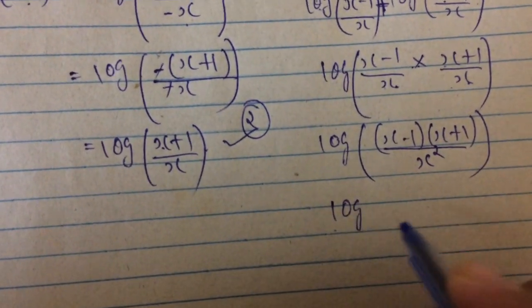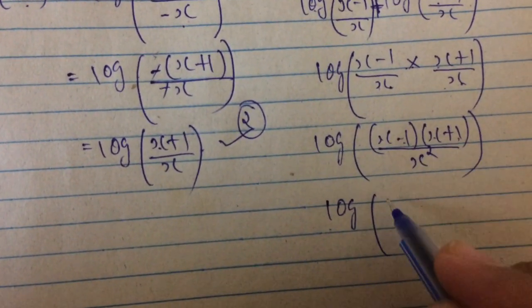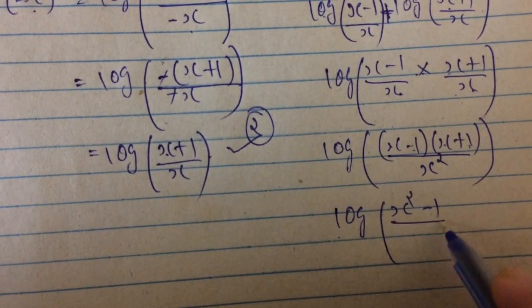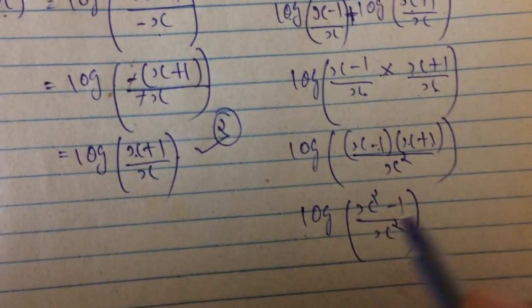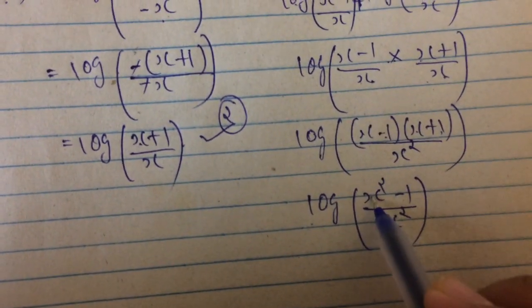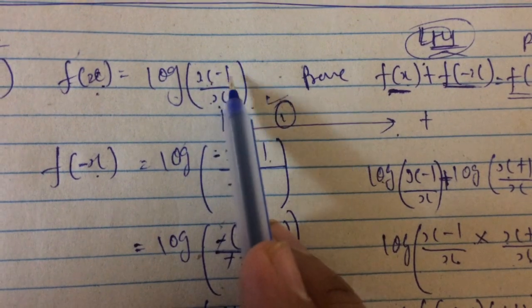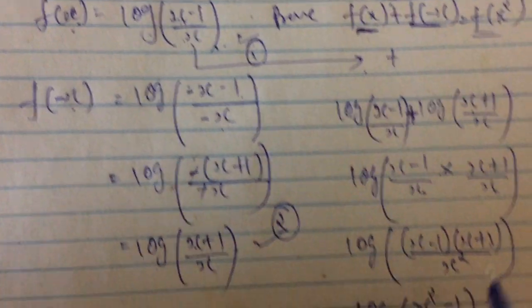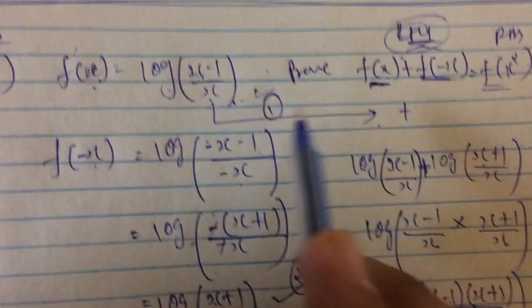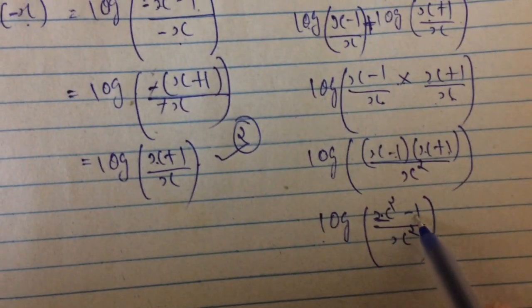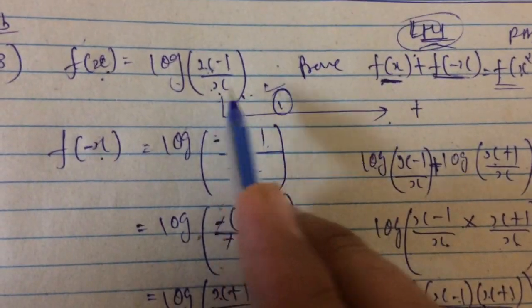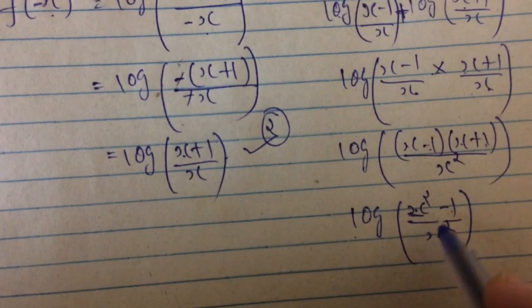We simplify further: (x-1)(x+1) becomes x²-1 divided by x². Now imagine our function: f(x) is log((x-1)/x), but here we have x²-1 and x², so this becomes a function of x².